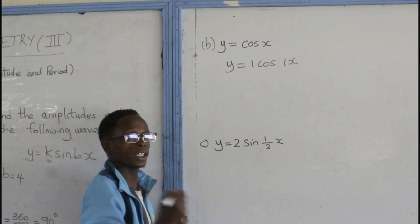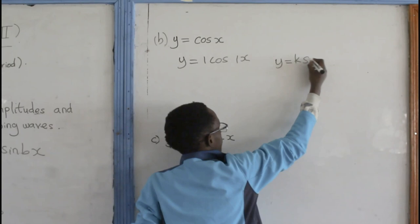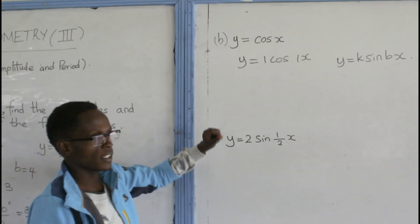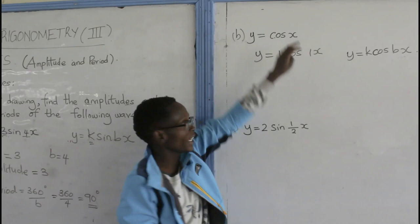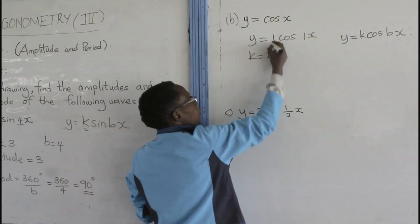We can see that for our case here, since the value given is cosine not sine, we can see that the value of K equals to 1, and the value of B from the equation equals to 1.